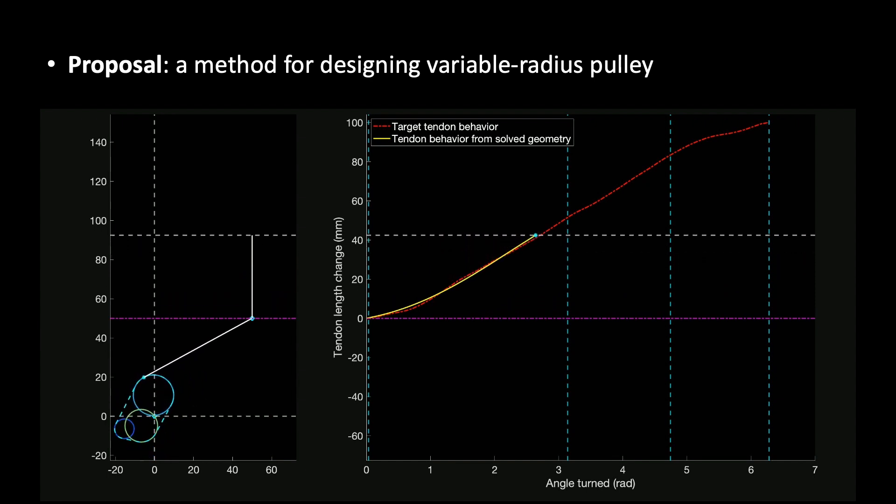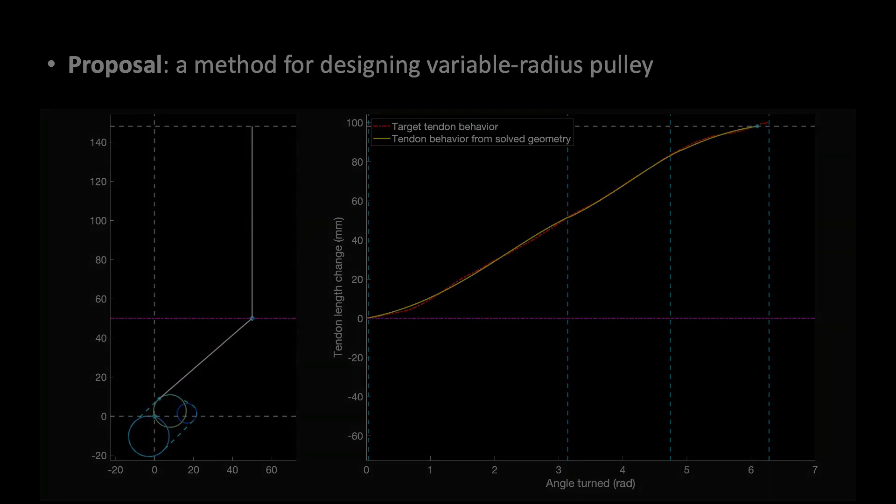Here we see a simulation of a composite pulley rotating about its center point. Observe how the tendon length changes as the pulley rotates based on the distance, radius, and angle of the elementary shape interacting at the point of contact.